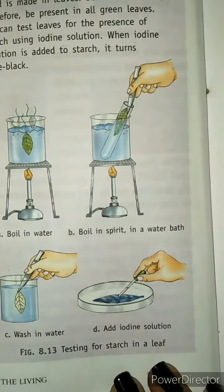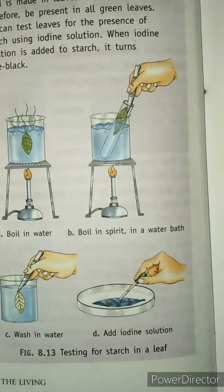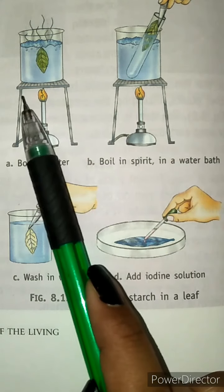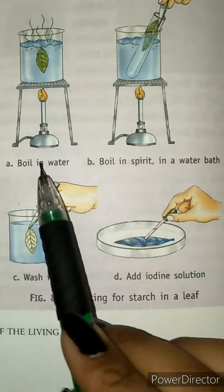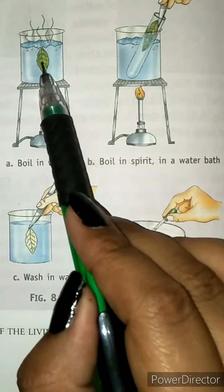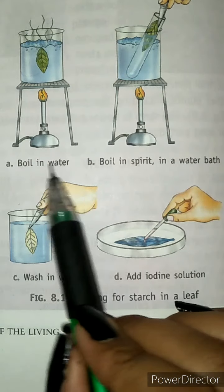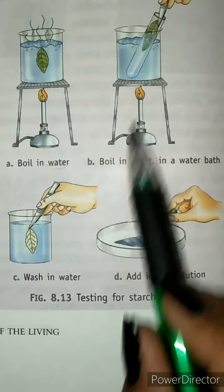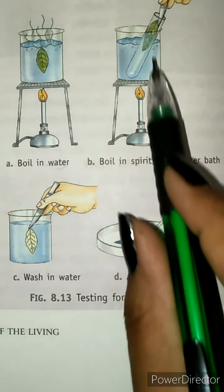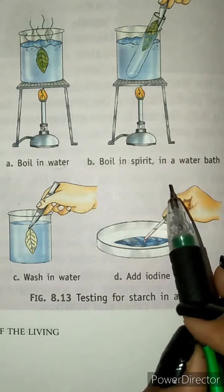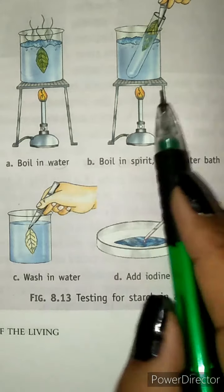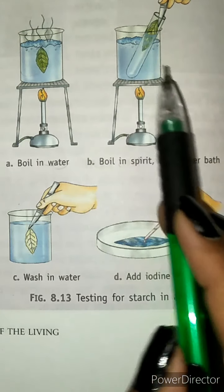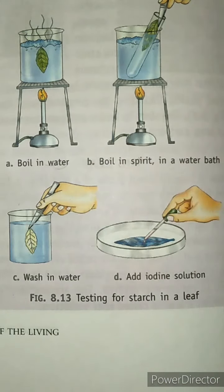In the first step of the experiment, boil a leaf in a beaker with some water. Then boil the leaf again in spirit or alcohol using a water bath.